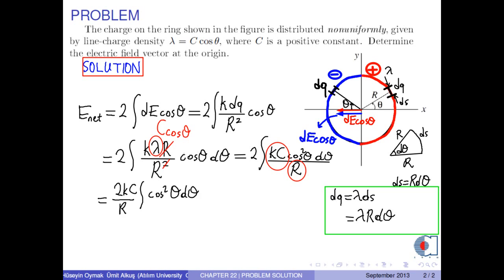So, we obtain 2 times k times c over r integral of cosine theta squared d theta. The limits of the integral are negative pi over 2 and pi over 2.